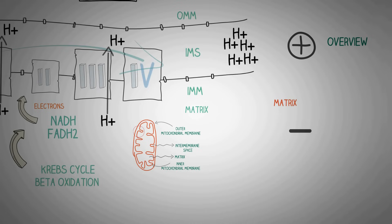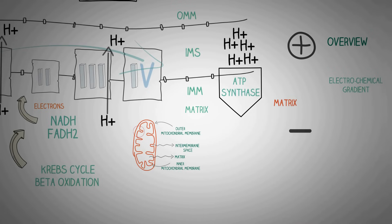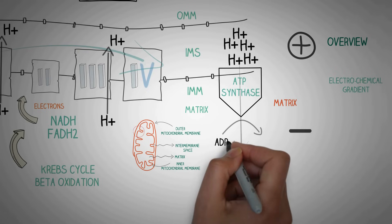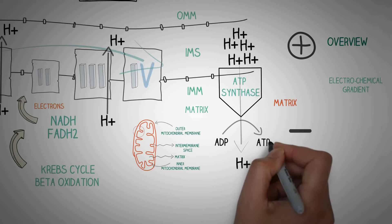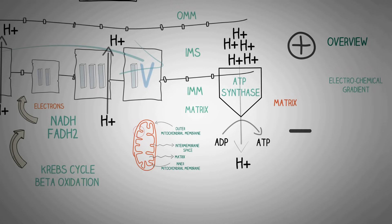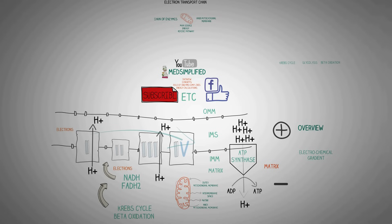This is called the electrochemical gradient. The hydrogen ions cannot cross against this electrochemical gradient because the inner mitochondrial membrane is non-permeable to ions, so a special transporter is required. The enzyme ATP synthase comes into play, transporting hydrogen ions into the matrix and using the energy generated from the flow of hydrogen ions to phosphorylate adenosine diphosphate into adenosine triphosphate — the currency of energy in our body.